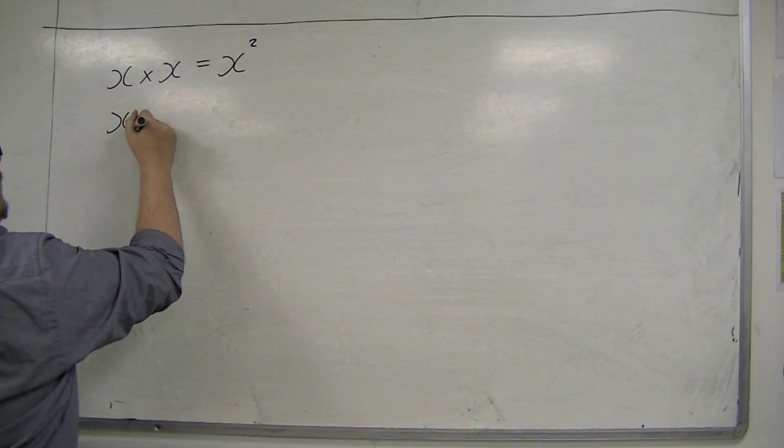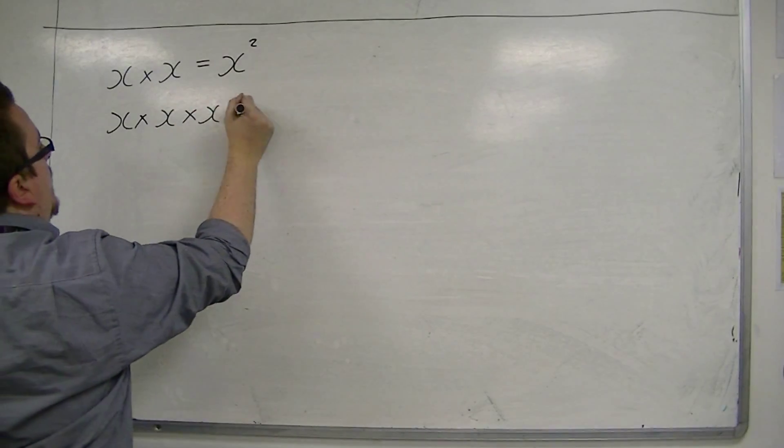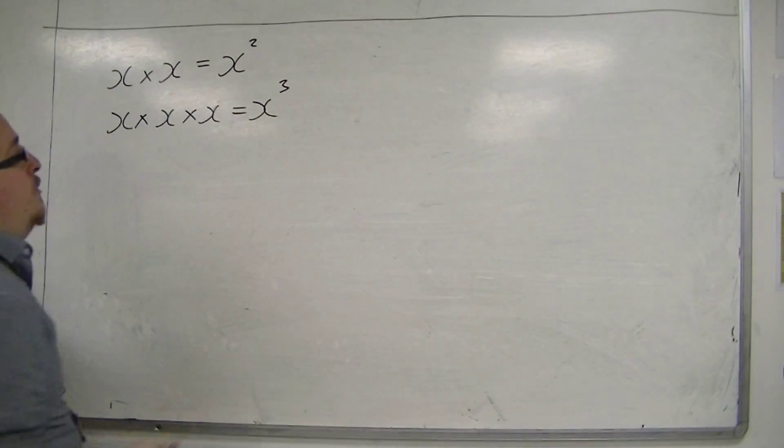If you have x times x times x, then this would be x cubed. Well, that seems fair enough.